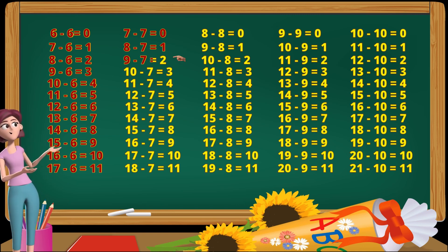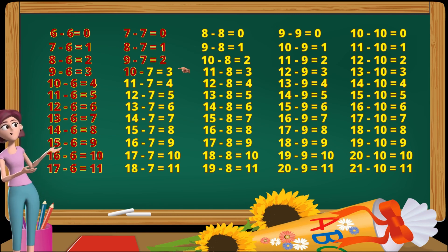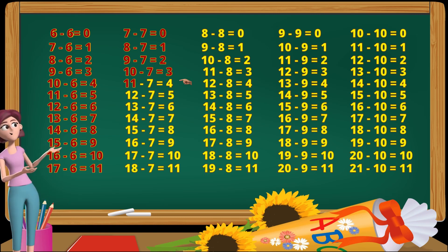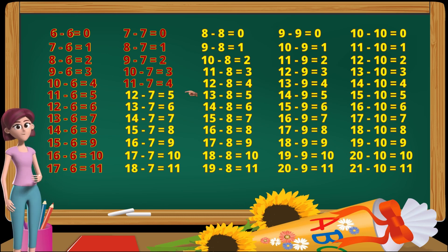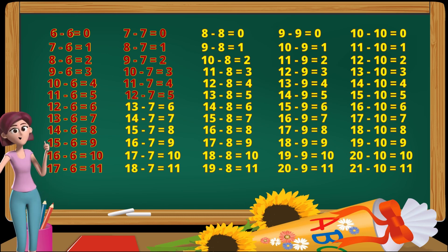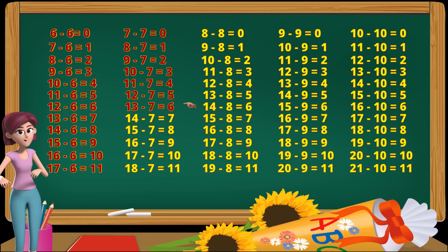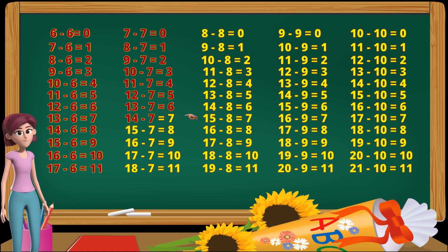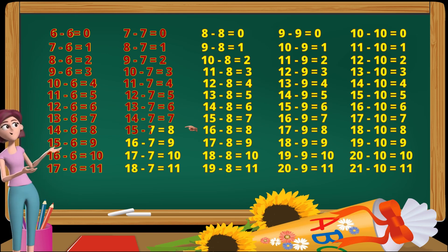9 minus 7 equals 2. 10 minus 7 equals 3. 11 minus 7 equals 4. 12 minus 7 equals 5. 13 minus 7 equals 6. 14 minus 7 equals 7.